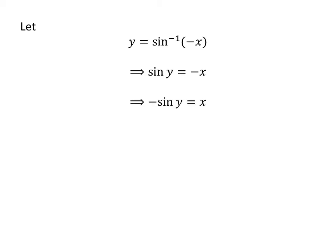Taking the minus sign to the left side of the equation, we get minus sine of y is equal to x. As we know, the trigonometry identity minus sine of y is equal to sine of minus y.